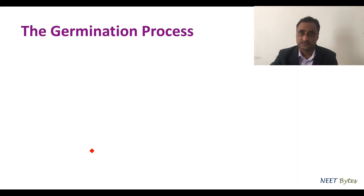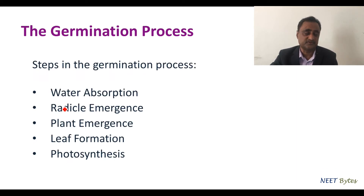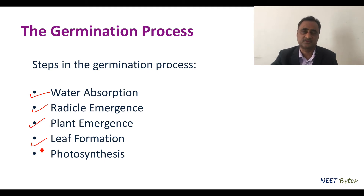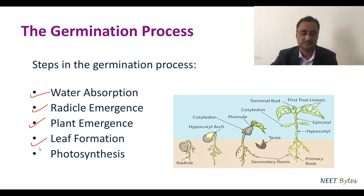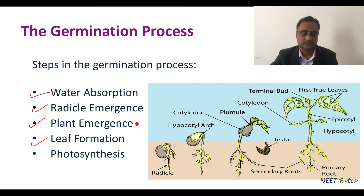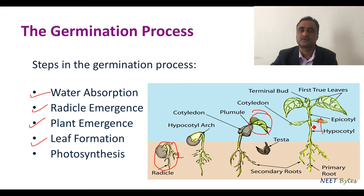Now let us talk about the germination process. We can divide the germination process into a few simple steps: the first is water absorption, followed by radicle emergence, then plumule emergence, leaf formation, and finally photosynthesis. The first thing that emerges is the radicle, and once the radicle is formed, we see the formation of the plumule, after which the entire plant develops.